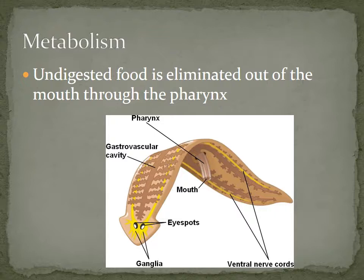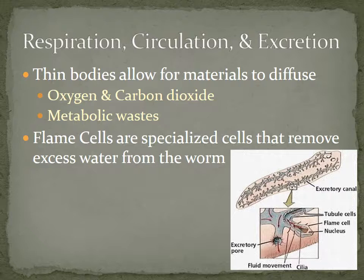On this diagram, the hole shown is where the mouth originates, and then the pharynx extends out — the mouth is at the end of the pharynx. The pharynx will come out when eating prey, then retract back into the flatworm — the planaria in this instance — when the flatworm is not eating or digesting.